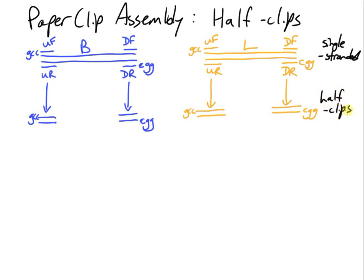When we're ready to do an assembly, we combine half clips together. We don't use all of our half clips because we'll use some of them hopefully in future reactions if we want to change the order or swap new parts in. So we use just as much as we need to build our full clips.